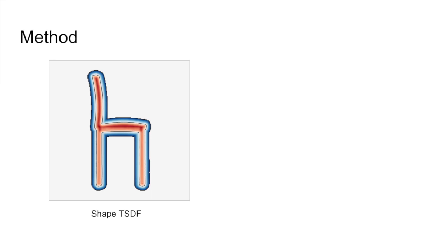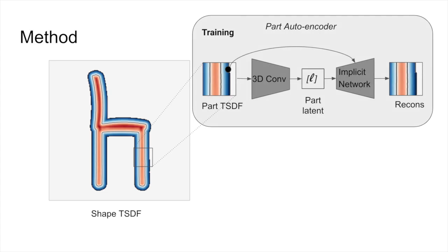The part latent space is learned by autoencoding randomly-corrupted parts from ShapeNet. We use a 3D-CNN encoder and an implicit function decoder supervised by binary cross-entropy classification loss.